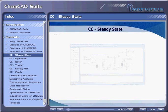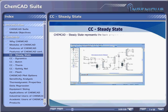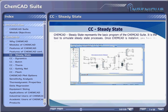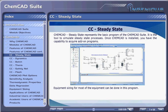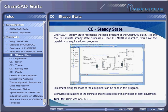CC Steady State. ChemCAD Steady State represents the basic program of the ChemCAD suite. It is the tool to simulate steady state processes. Once ChemCAD is installed, you have the capability to acquire add-in programs. Equipment sizing for most equipment can be done in this program. It provides calculations of the purchase and installed cost of major pieces of plant equipment. It is ideal for users who want to design processes or rate existing processes in steady state.